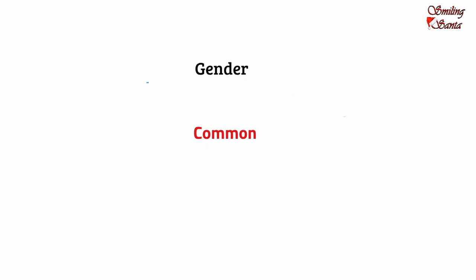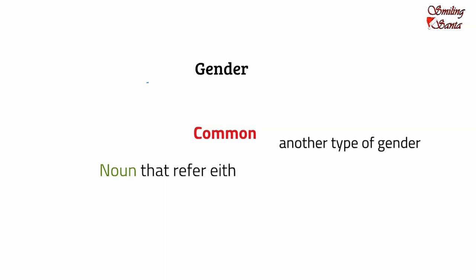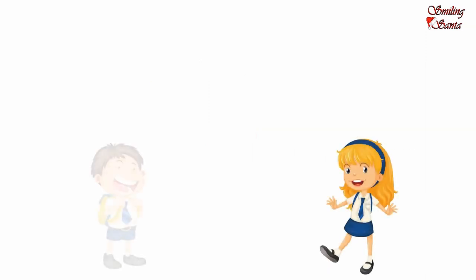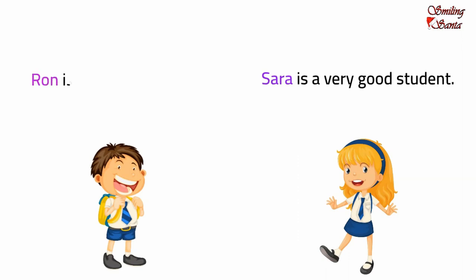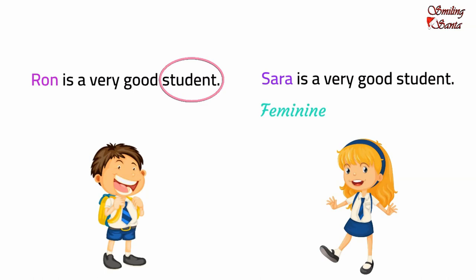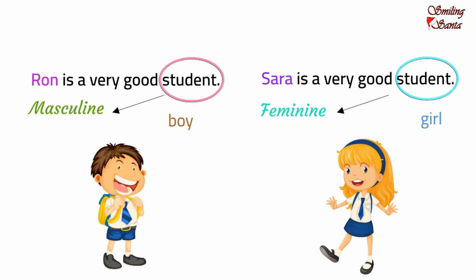Common gender — what is common gender? This is the third type of gender. A noun that refers either to a male or a female is said to be a common gender. Now, look at these two sentences: Sarah is a very good student. Ron is a very good student. Here, the noun student refers to both the feminine gender Sarah as well as the masculine gender Ron. We are using the same word student for both genders — student refers to both the girl as well as the boy, female as well as the male.